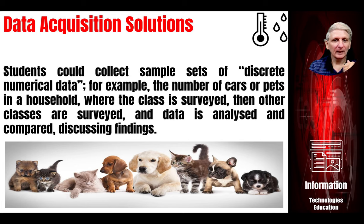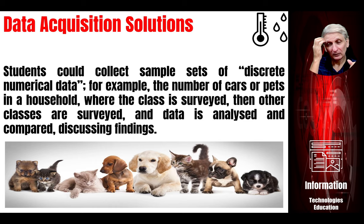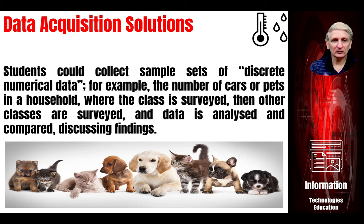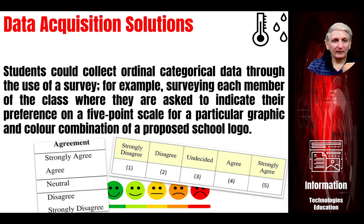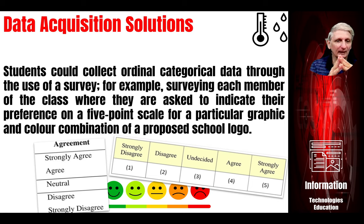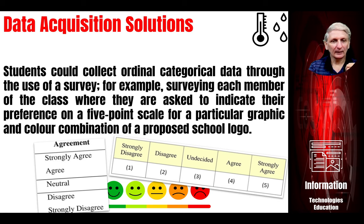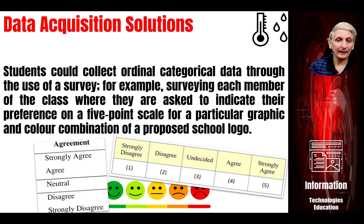Another example is collecting data about the number of cars or pets they have at home, then analyzing and comparing different values — maybe between classes — and discussing what this means. Students can also look at different ways of doing surveys, such as a Likert scale or five-point scale where participants choose between a picture, a word description, or a numerical value, and consider how these different approaches to collecting data might be misinterpreted — does a five mean it's good or bad, does a smiley face mean it's good or bad?